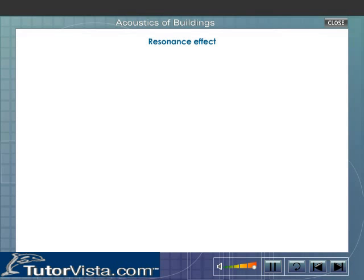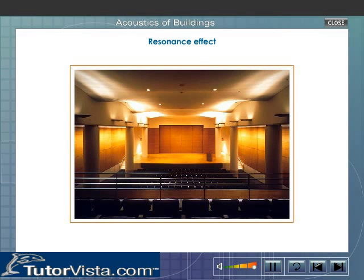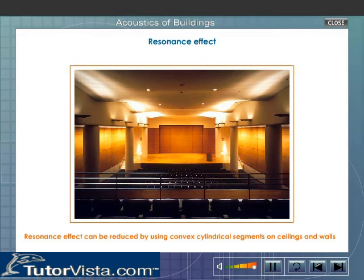Resonance effect. When the frequency of the sound produced in the hall is equal to the natural frequency of the air column in hollow spaces of the hall, the window panes start vibrating in resonance and thus produce a jarring effect. Using convex cylindrical segments on ceilings and walls, we can reduce this effect.